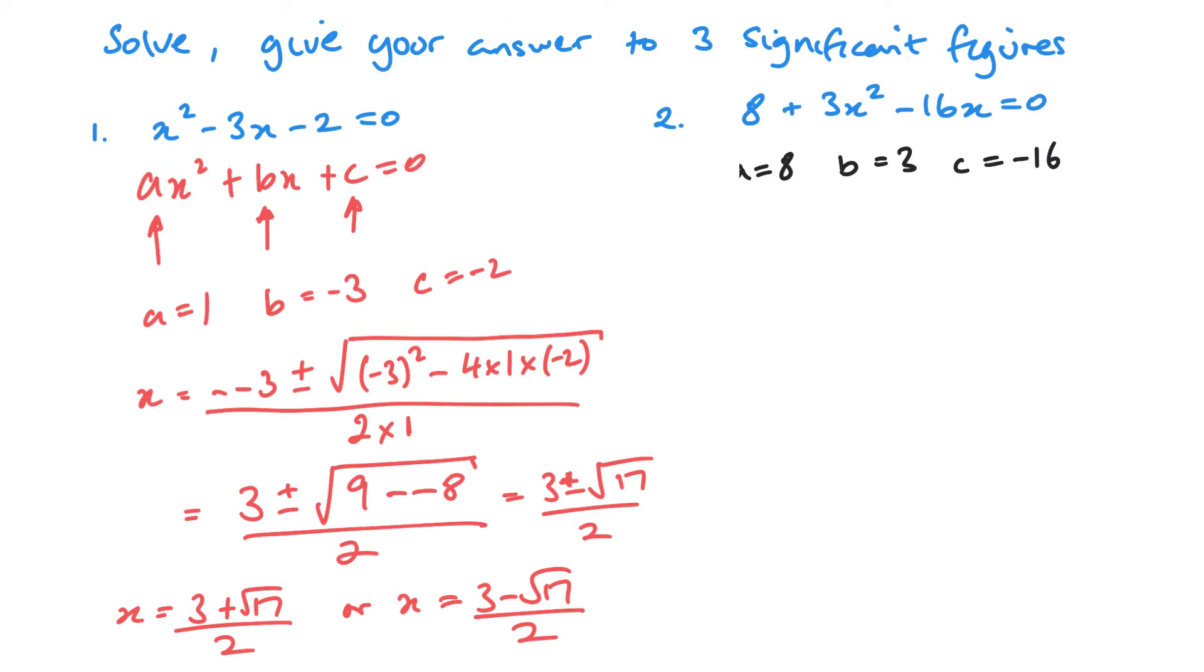What we do need to do is we need to make sure that we've first got it in the right order, or that we are looking at the values in front of the x squared, the x, and then the constant. So I can jump straight in if I wanted to. The value in front of the x squared is 3, in front of the x is negative 16, and my constant is 8. But it does also make sense to rearrange it first. Just so that you don't make those kind of mistakes.